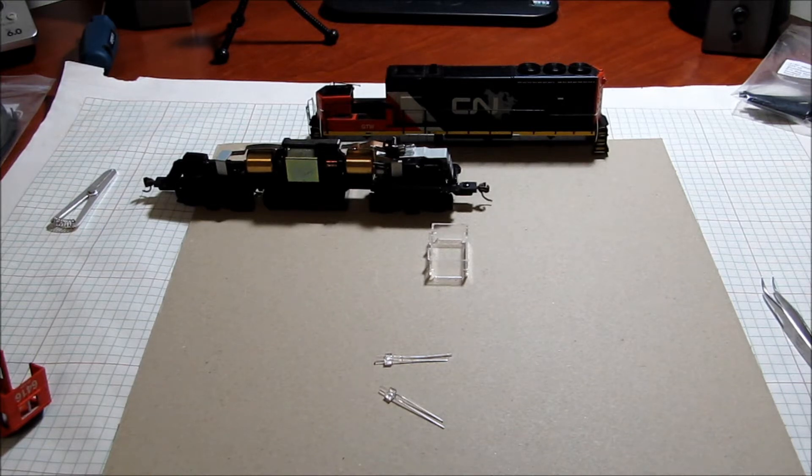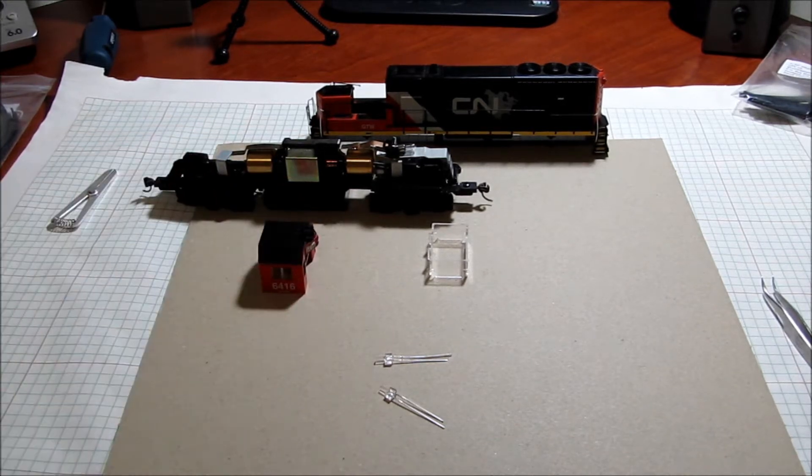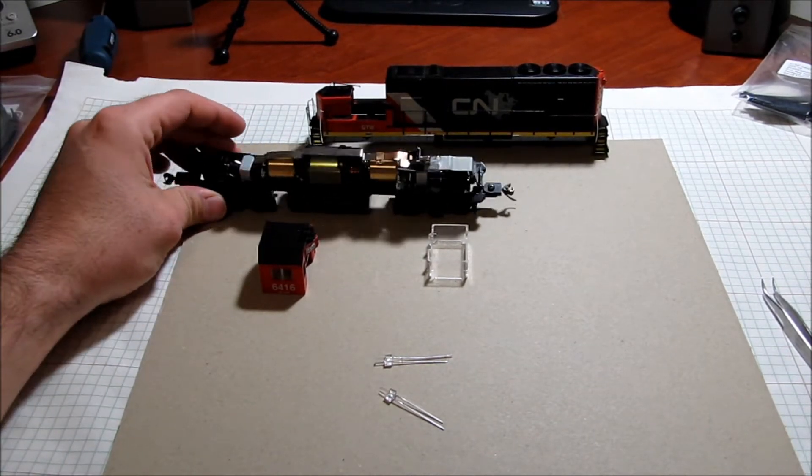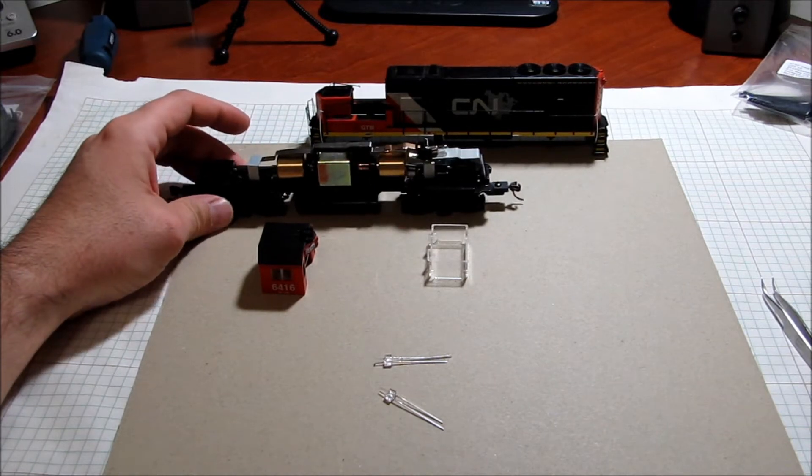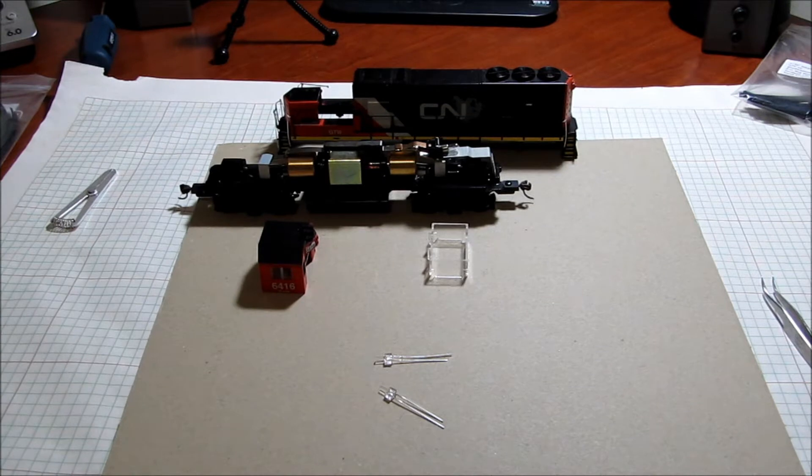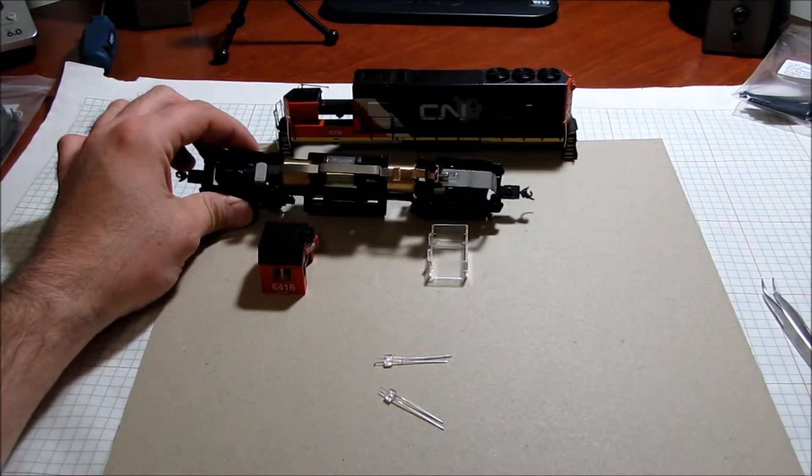As you can see, I've already removed the shell from the chassis. This is the GP 40-2 that I mentioned. I'm going to be installing an SDH 164D.